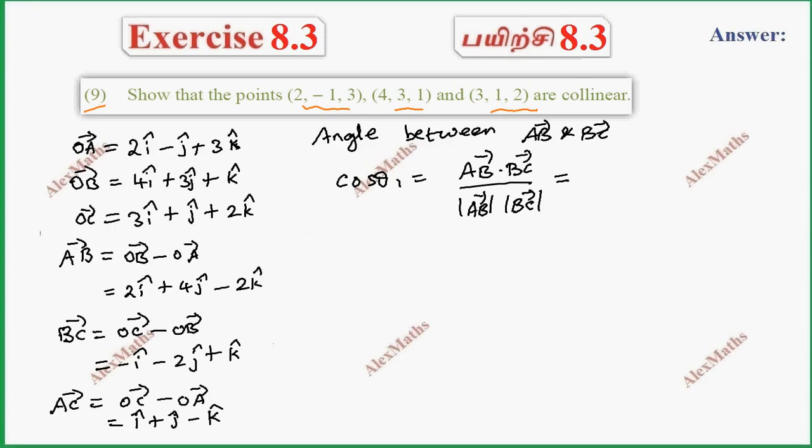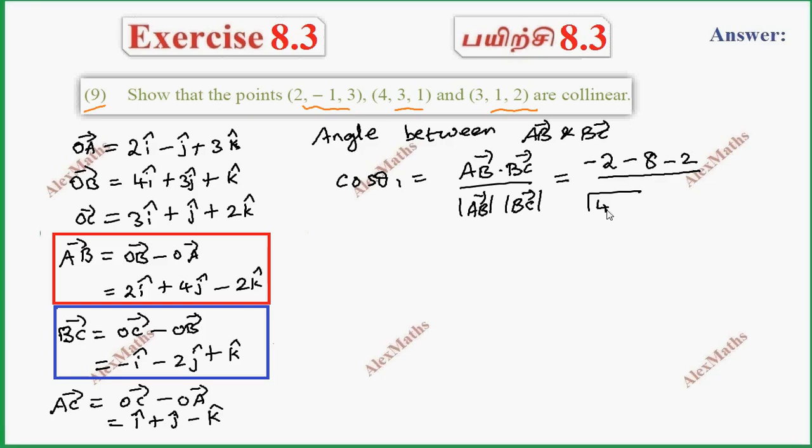AB and BC dot product - multiply corresponding components i and i, j and j. This is minus 2, that is minus 8, that is minus 2, divided by magnitude root of 4 plus 16 plus 4, times magnitude 1 plus 4 plus 1. So this is total minus 12 by root 24.